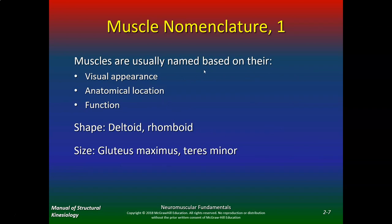Muscles are usually named based on their visual appearance, anatomical location, and their function. So the shape of the deltoid, the rhomboid, the size — gluteus maximus, teres minor — these are examples. We'll go over all these.